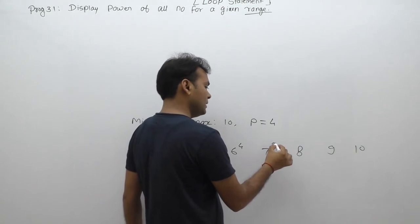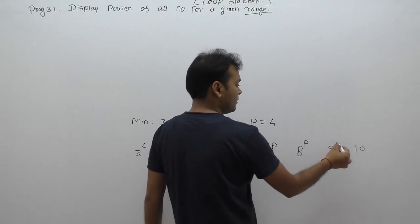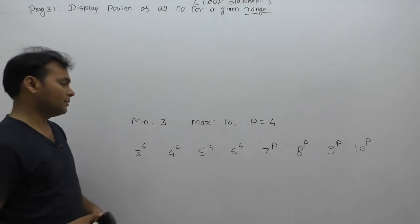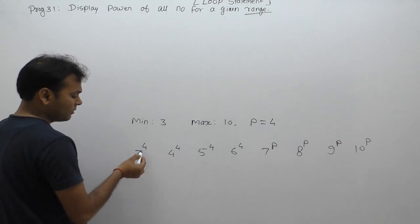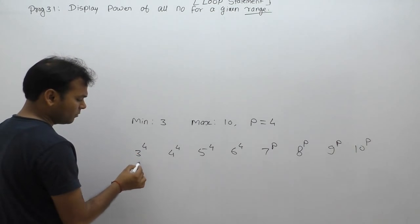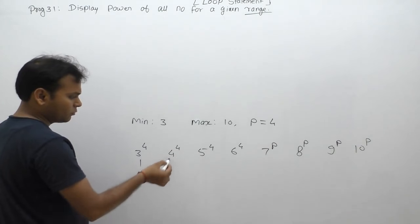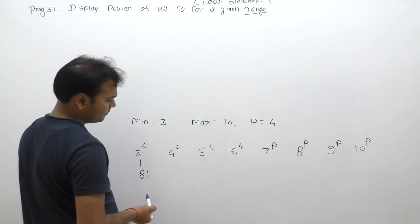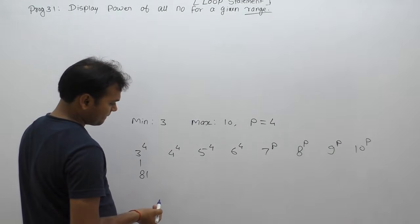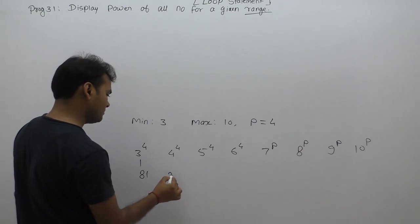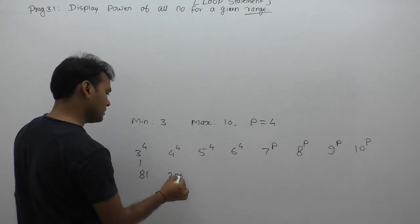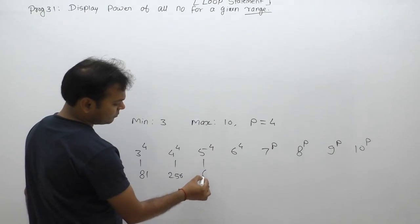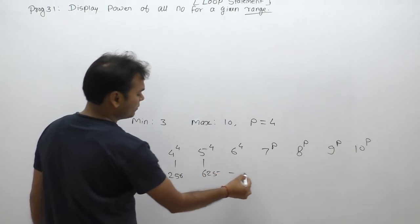Finally, we calculate power P with respect to every number for the given range and display them separately. For example: 3 to the power 4 is 81, 4 to the power 4 is 256, and 5 to the power 4 — since 5×5=25, 25×25 — is 625.